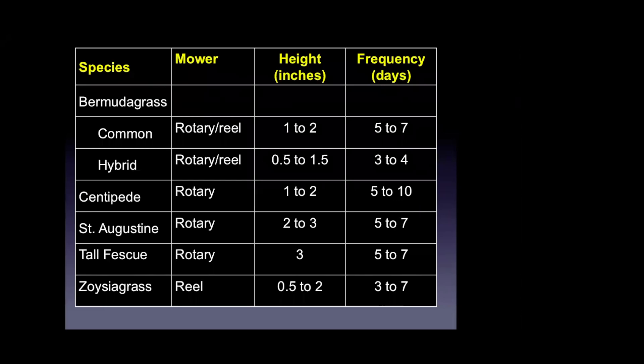Depending on the species being managed, there is an appropriate mowing height and frequency to prevent scalping. Typically we want to remove no more than one-third of the total leaf area per mowing — that could be every five to seven days, or five to ten days for a slower-growing grass like centipede. Mowing at the appropriate height and frequency during active growth will promote lawn recovery and should help with competition against weed species.